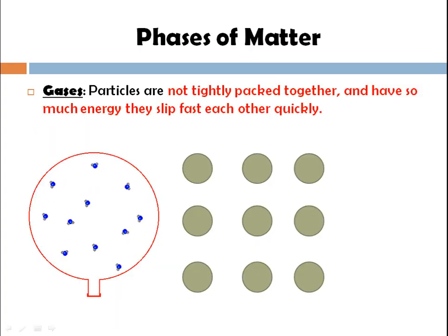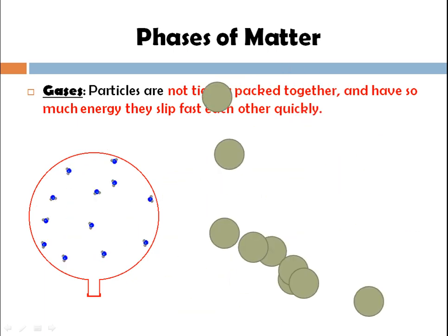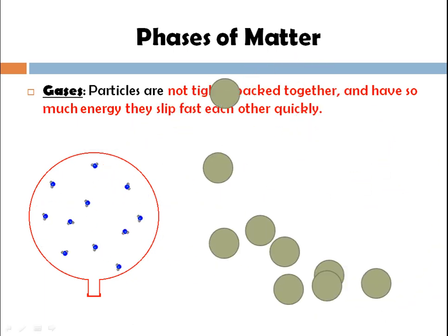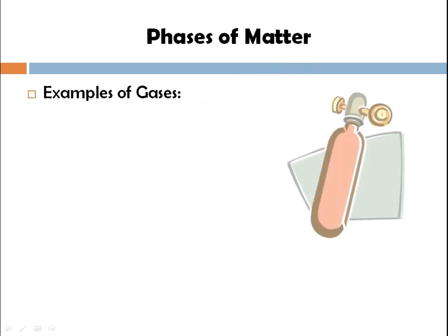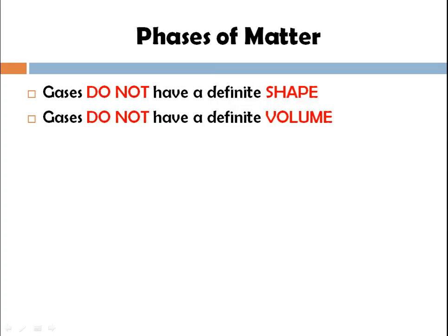The force of attraction between the atoms of solid matter is strong compared to liquid. Comparing all three states: the force of attraction in solids is strongest, followed by liquid, then gaseous phase. Gas particles are not tightly packed together and have so much energy that they slip past each other quickly — they can move anywhere in the environment. Gas does not have a definite shape and does not have a definite volume. Only when filled into a closed container can you measure its volume.